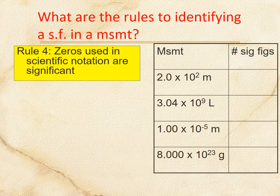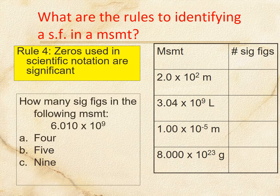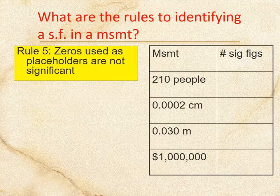Zeros in scientific notation are significant. For 2.0 × 10², remember the '× 10 to whatever power' doesn't affect sig figs — so that's two sig figs. Then three sig figs for 1.00, four for 8.000, and for 6.010 × 10⁹, the '× 10⁹' doesn't matter — so if you selected a, you're right.